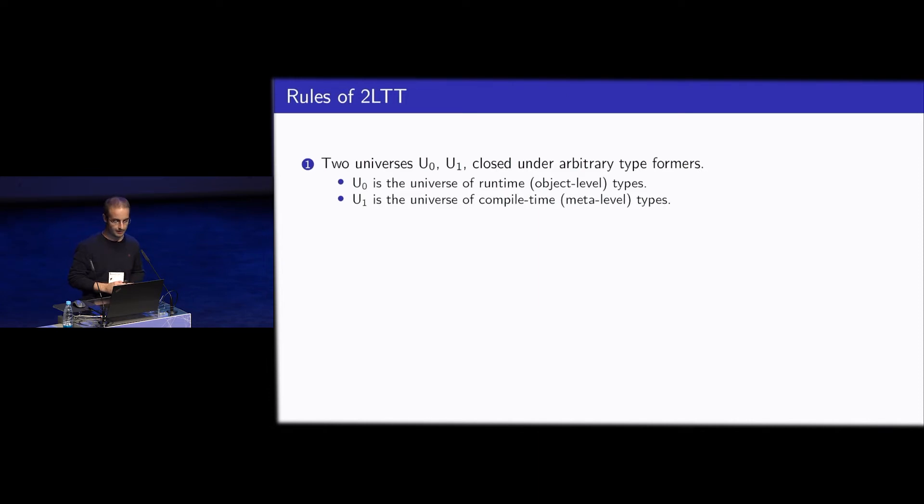So let's look at the basic rules. We have two universes closed under whatever type formers we would like to have. And U0 is the universe of runtime types. So if you have something in U0, then it can appear in the code output. It's a runtime type. If you have some type in U1, then it cannot appear in the output of staging because it has to live only in the compile time language. And during staging, it has to disappear at some point. It has to be computed away. And likewise, if you have an inhabitant of some compile time type, then that inhabitant value also cannot appear in the staging output. And all type formers and all eliminators stay within the same universe. So at this point, there is no way to cross between universes at all. The only way to cross between these two universes is by specific staging operations.